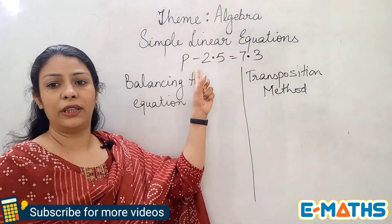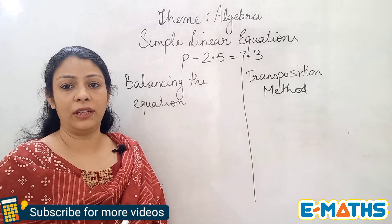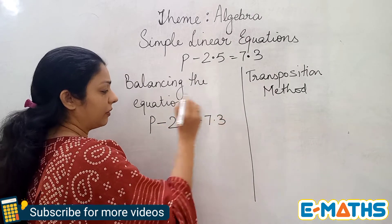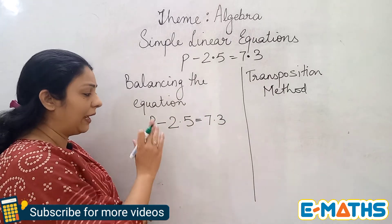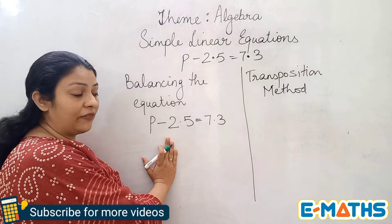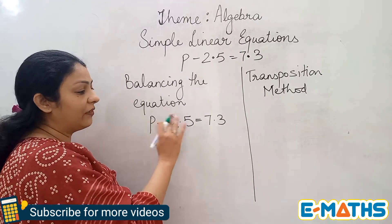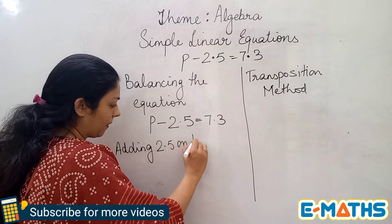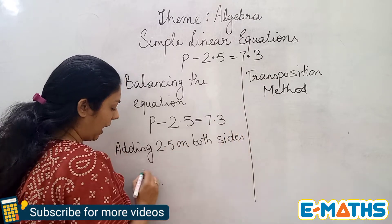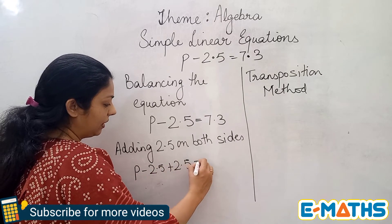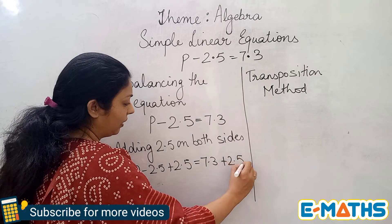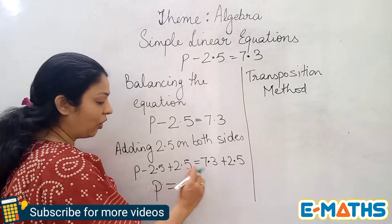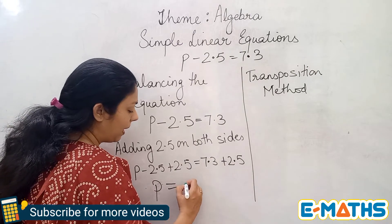The new equation is P minus 2.5 equals 7.3, and I'll solve it with both methods again. Using the balancing the equation method, I need to remove minus 2.5. Taking the opposite sign means I add 2.5 on both sides. So P minus 2.5 plus 2.5 equals 7.3 plus 2.5. The minus 2.5 and plus 2.5 cancel, leaving P on the left, and adding the two decimals on the right gives 9.8.